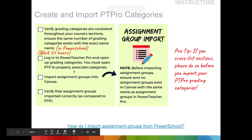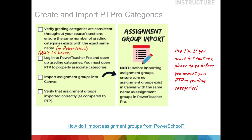Canvas and Power Teacher Pro grade passback — I've used the same slide deck for a couple of years, updating it as changes are made. If you are in a situation where you cross-list sections into your courses, then make sure you do that before you do anything else. You have to set up the categories first in Power Teacher Pro. Make sure you have unique categories in Power Teacher Pro that aren't named the same as any existing Canvas categories. After you create your Power Teacher Pro grading categories, wait 24 hours and then import those assignment groups into Canvas.